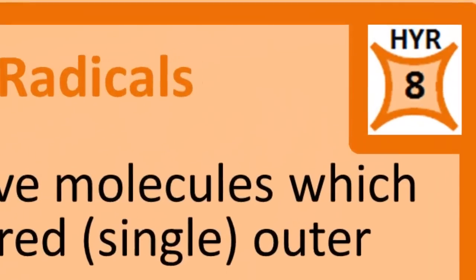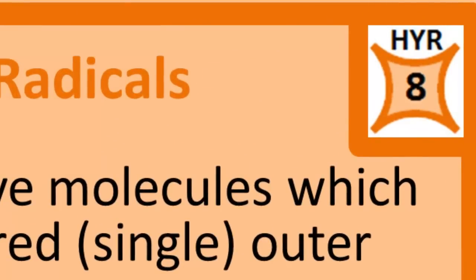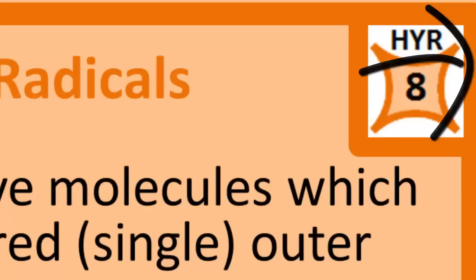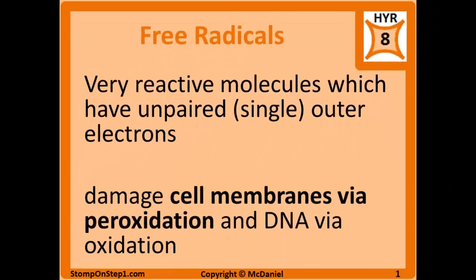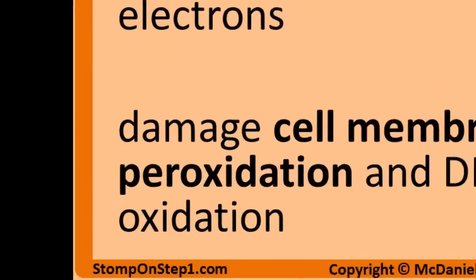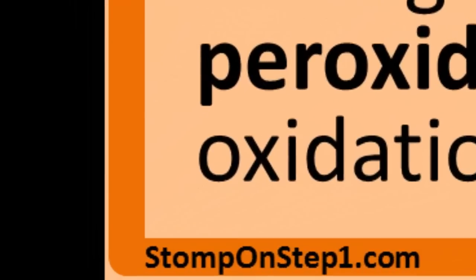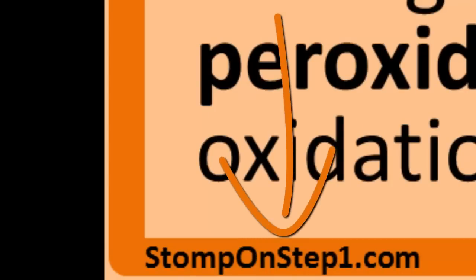You can see here in the top right corner that I give free radicals a high yield rating of 8. For those of you that don't know what that is, it is a rating scale from 1 to 10 giving you a rough estimate for how important each topic is for the USMLE Step 1 exam. If you'd like to learn more about how that's calculated or how you can interpret that number, you can go to my website.